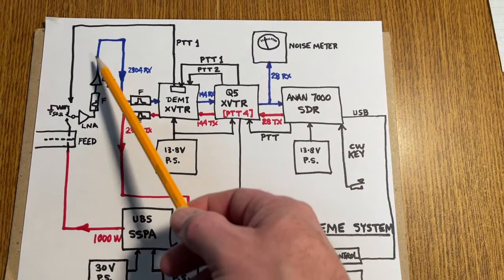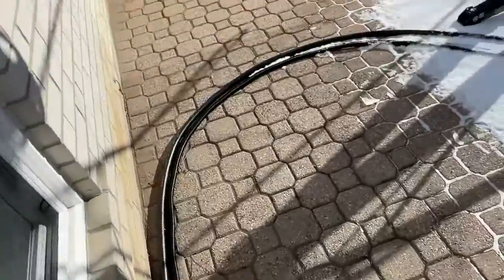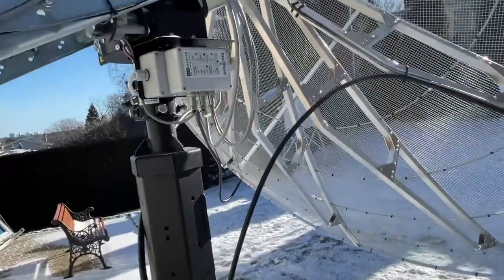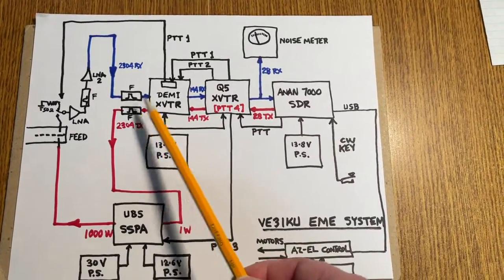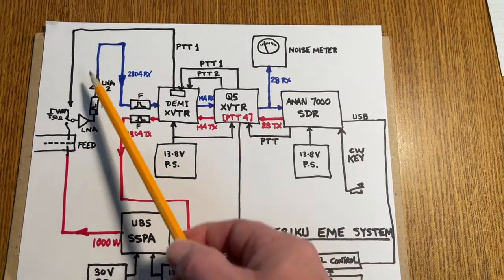A long coax, 100 feet of Times Microwave LMR-400 coaxial cable, another filter, and then the transverter. So that's the 2304 MHz signal path.